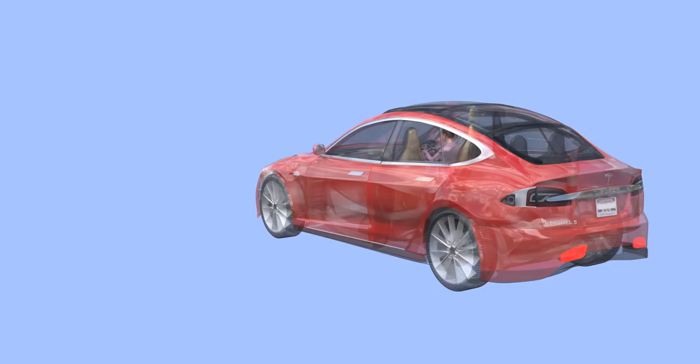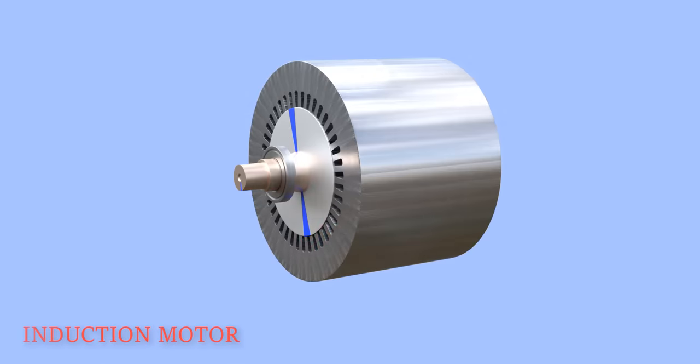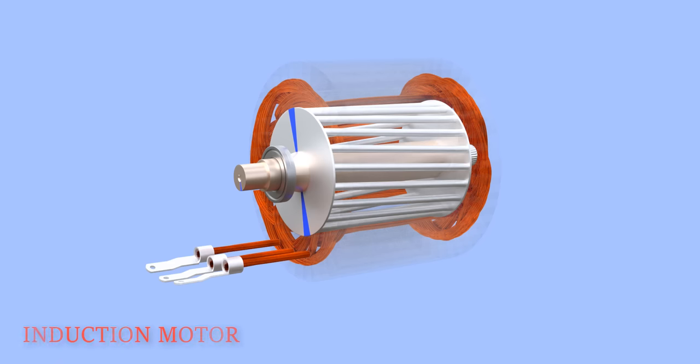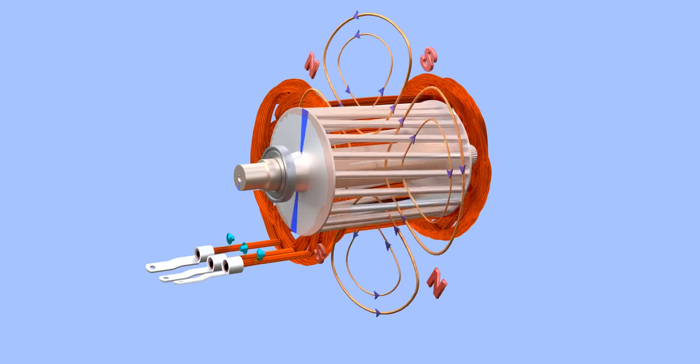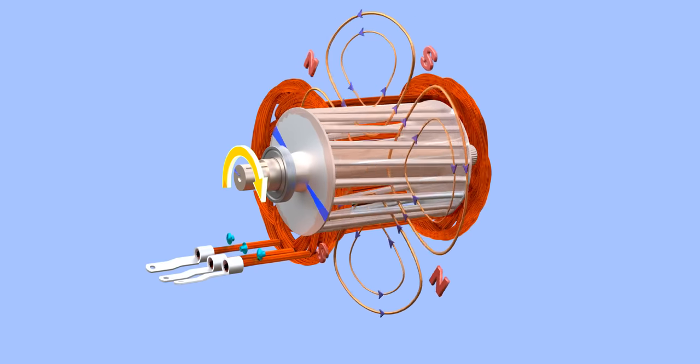For ease of understanding, let's assume an induction motor is driving the Tesla Model S. In an induction motor, you supply the input energy to the stator coils. When energized, the coils produce a rotating magnetic field. The RMF drives the rotor, which creates torque and allows the motor to drive the load.